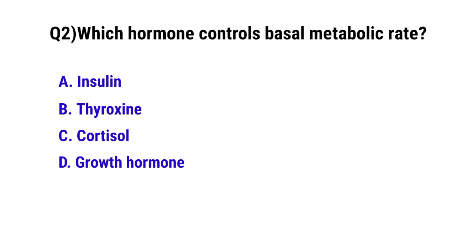Question number 2: Which hormone controls basal metabolic rate? The correct option is B: Thyroxine.